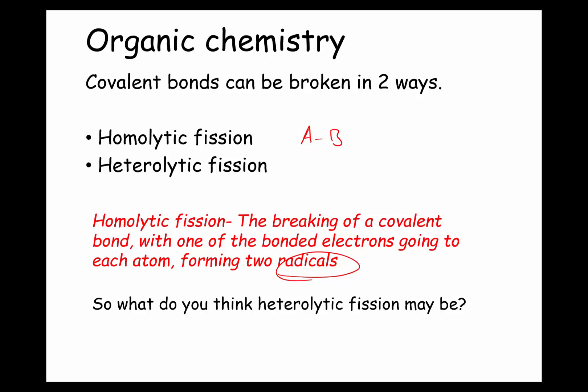Let's say we've got a species AB. Homolytic fission is when the shared pair from the covalent bond — there are two electrons — one electron goes to A and one electron goes to B. A radical is simply a species with an unpaired electron. The way we show a single unpaired electron is just by drawing a dot. You'll recall from intermolecular forces and hydrogen bonding that we represented water's lone pairs as two dots — for radicals, because it's a single unpaired electron, we just draw a single dot.